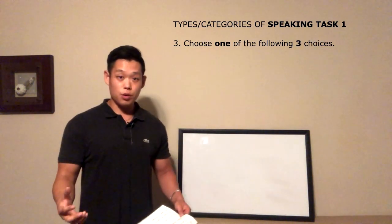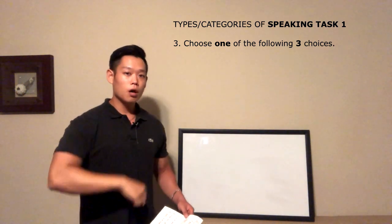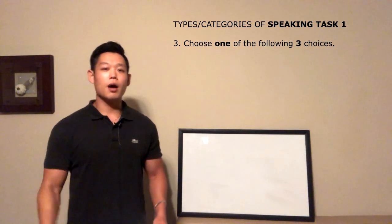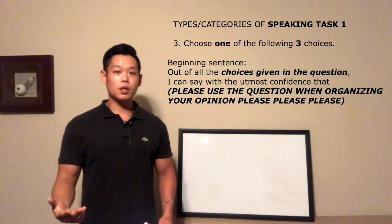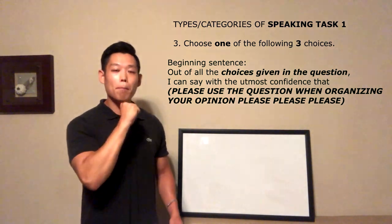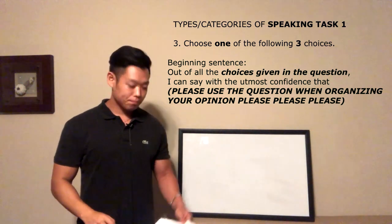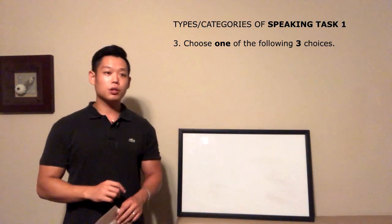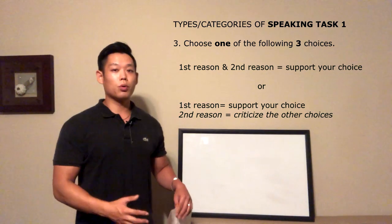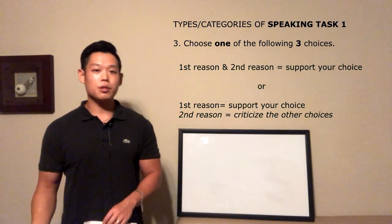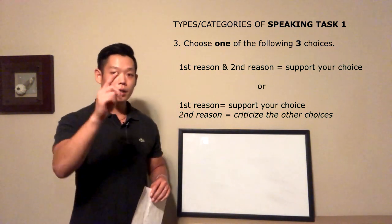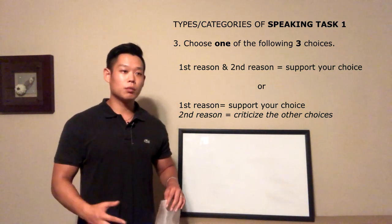The third type of Task 1 question is 'pick from three choices.' If the question gives you three choices, your beginning sentence every single time is: 'Out of all the choices given in the question, I can say with the utmost confidence that...' then use the question to organize your opinion. For your two reasons, you can either support your chosen opinion twice, or give one reason supporting your choice and a second reason criticizing the other choices — pick whichever is most suitable for you.